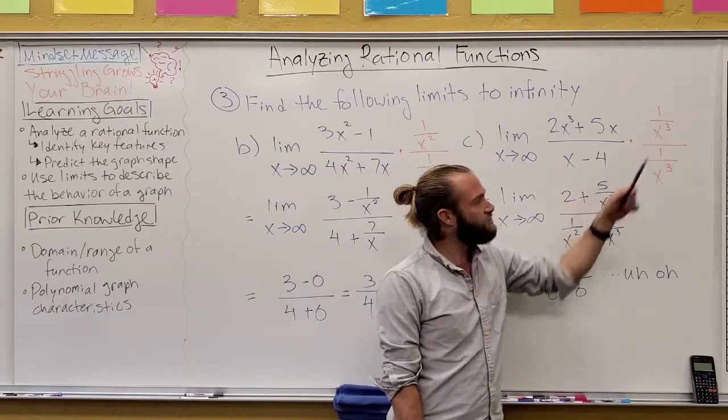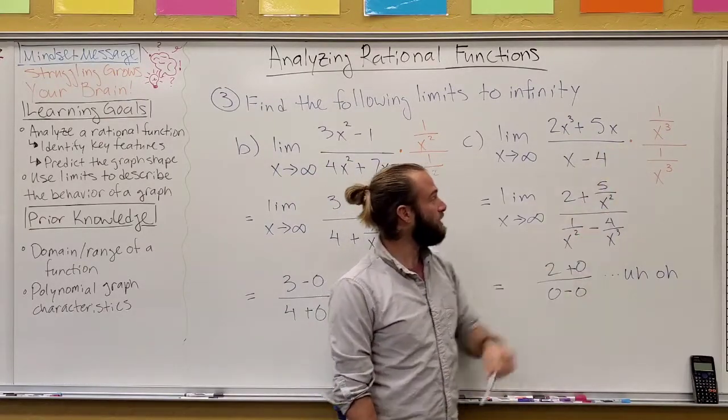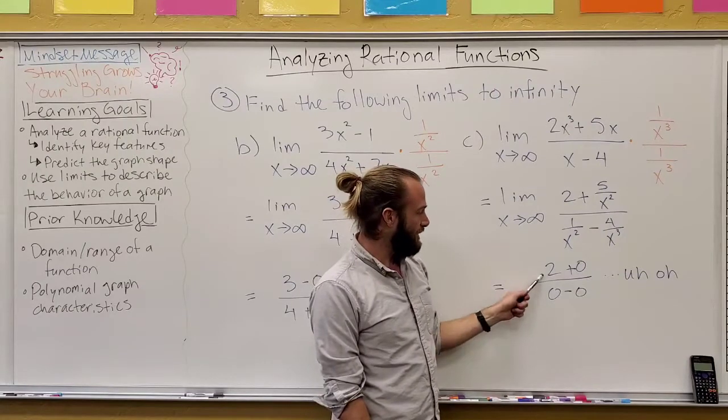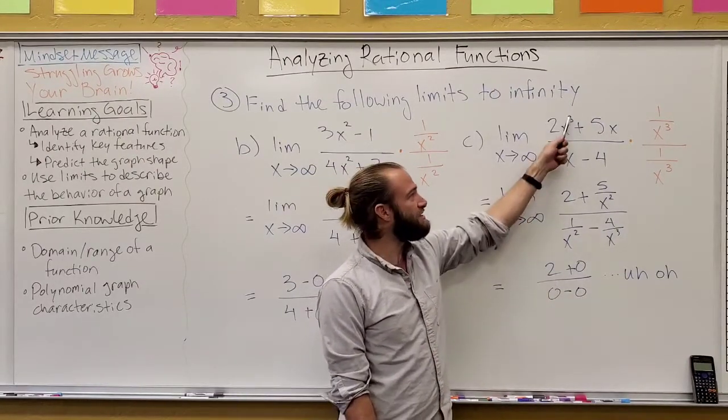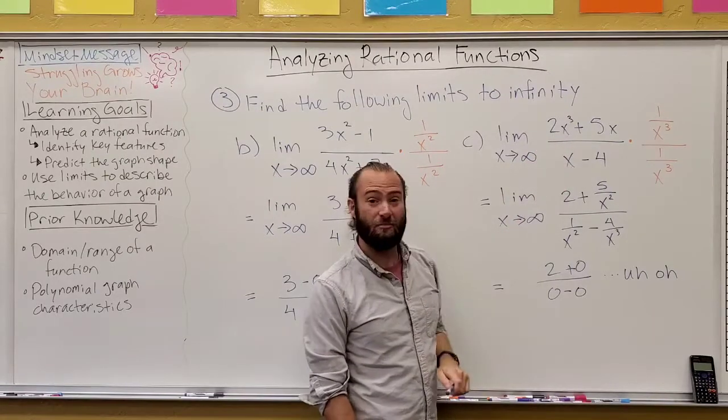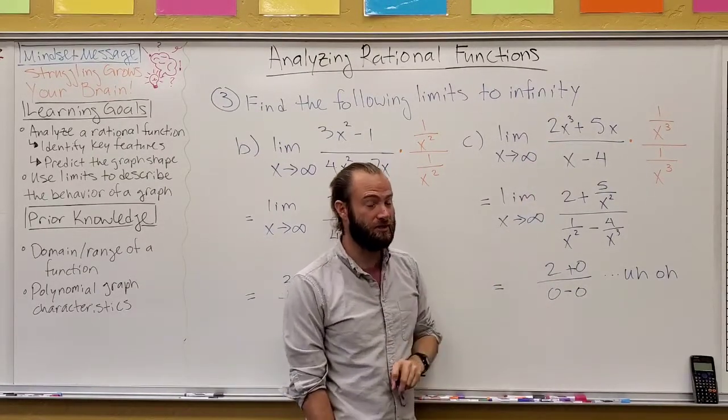and we use in this case one over x cubed as our multiplier on the top and bottom, then we see that we end up with zero on the bottom. Now this happened because this has a higher degree on top than bottom in this rational function for those two polynomials.